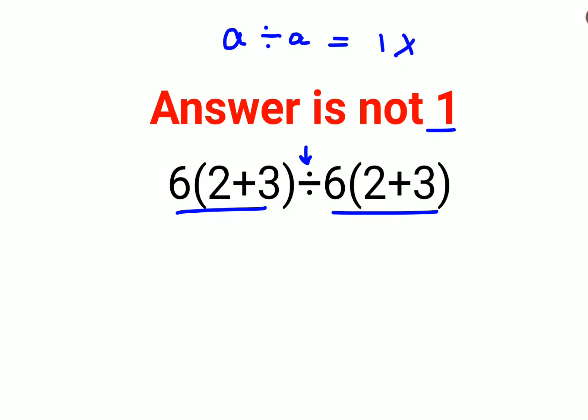According to BODMAS or PEMDAS, the first thing to do is parentheses or brackets. We'll keep 6 as it is, and since there's no sign between 6 and the bracket, that means multiplication. Then we have 2+3, which is 5. Division remains as it is, then 6 again with no sign, so that's also multiplication.